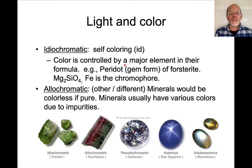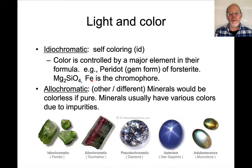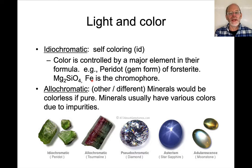When we talk about the sources of color, we sometimes refer to idiochromatic versus allochromatic sources. Idiochromatic means self-coloring — a major element in the mineral's formula causes the color. Olivine is an example: the iron in olivine, a major element, causes the color. Allochromatic refers to small impurities in minerals that cause the color; the pure mineral would be colorless, but a small impurity within it causes the color.